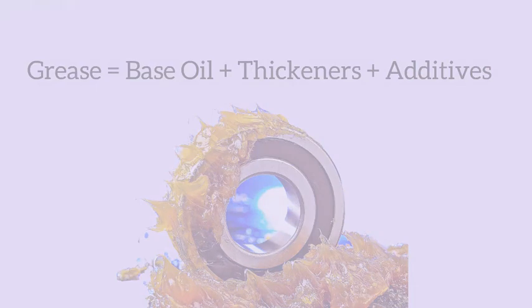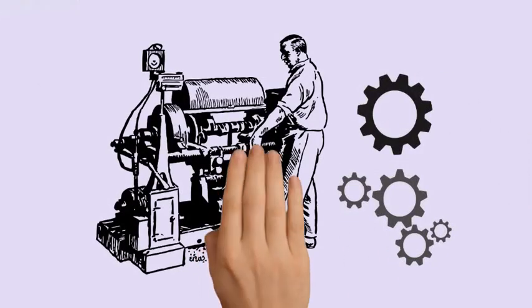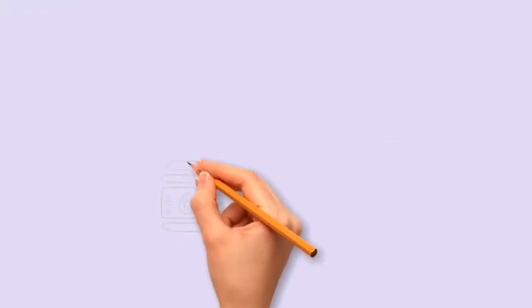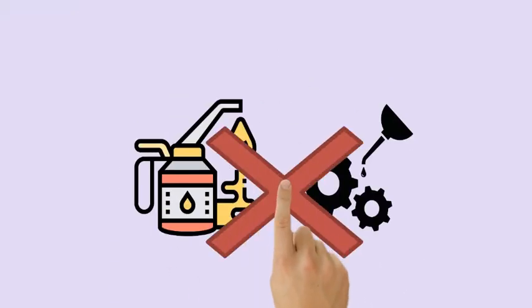Grease is lubricant basically used in a machine or machine components for lubrication purposes. Generally, it is used where oil lubrication is not possible.